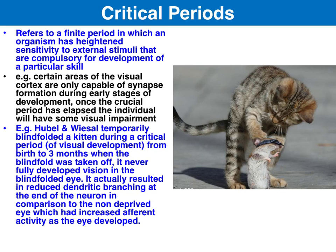Critical periods, on the other hand, are finite periods in which an organism has heightened sensitivity to external stimuli that is compulsory for the development of a particular skill. For instance, certain areas of the visual cortex are only capable of synapse formation during the early stages of development, and once the critical period has elapsed, the individual will have some visual impairment if they were not exposed to that visual stimuli during the critical period.